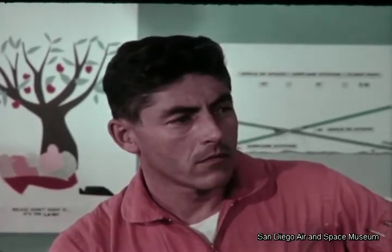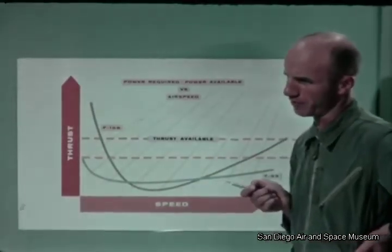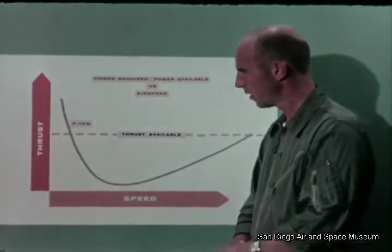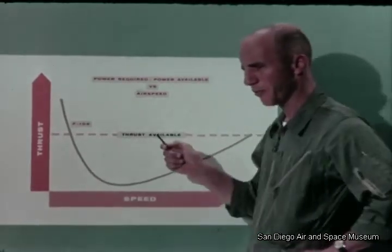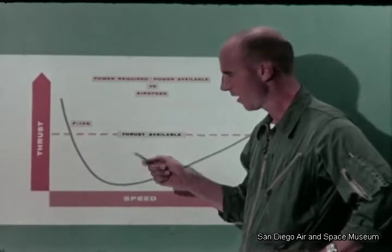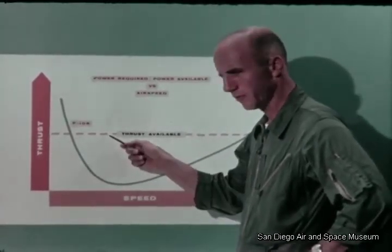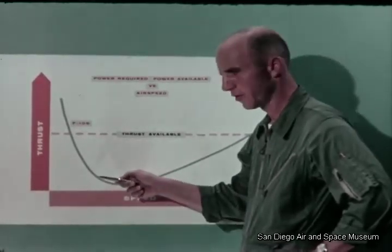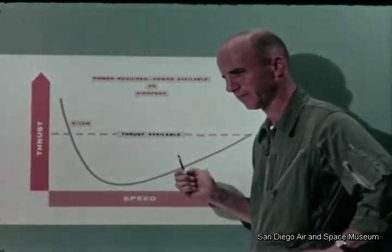All century series have a thrust-required curve which is much deeper than that of a T-33. This straight line represents the thrust available at military power. At any point, the distance between the thrust available and the thrust required represents the excess thrust available to accelerate the airplane. Just where does sink rate tie into this?